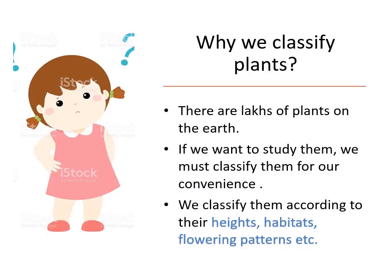Why classify plants? Do you know how many plants there are on the earth? There are 3.5 lakh plants on the earth. Some are very small like grasses, while others are very tall trees with thick canopy like neem tree and banyan tree. Some plants grow in water, some grow in desert like cactus. In addition, some plants have many varieties, like mango and rice and wheat. Such a big variety among plants and such large numbers!